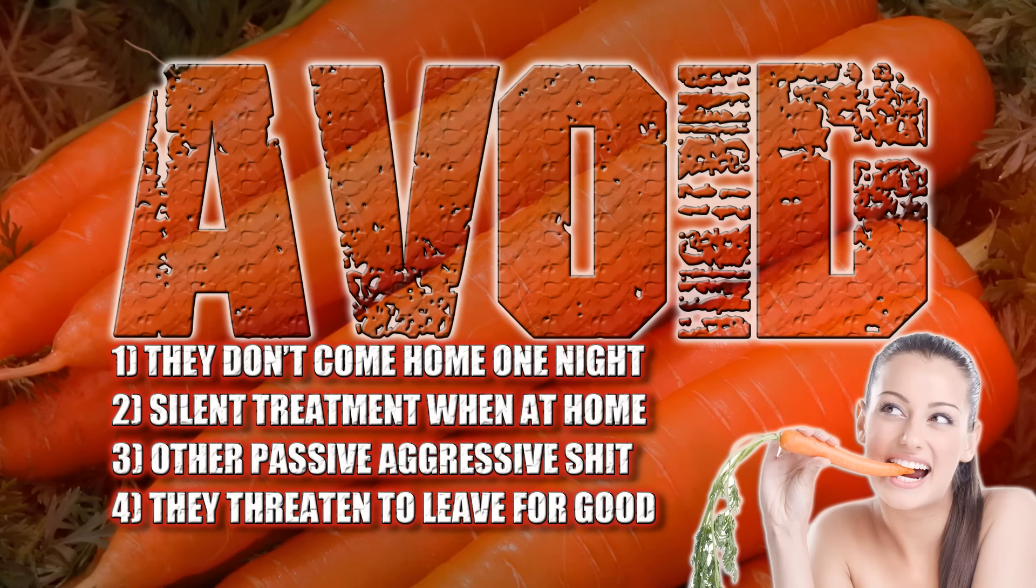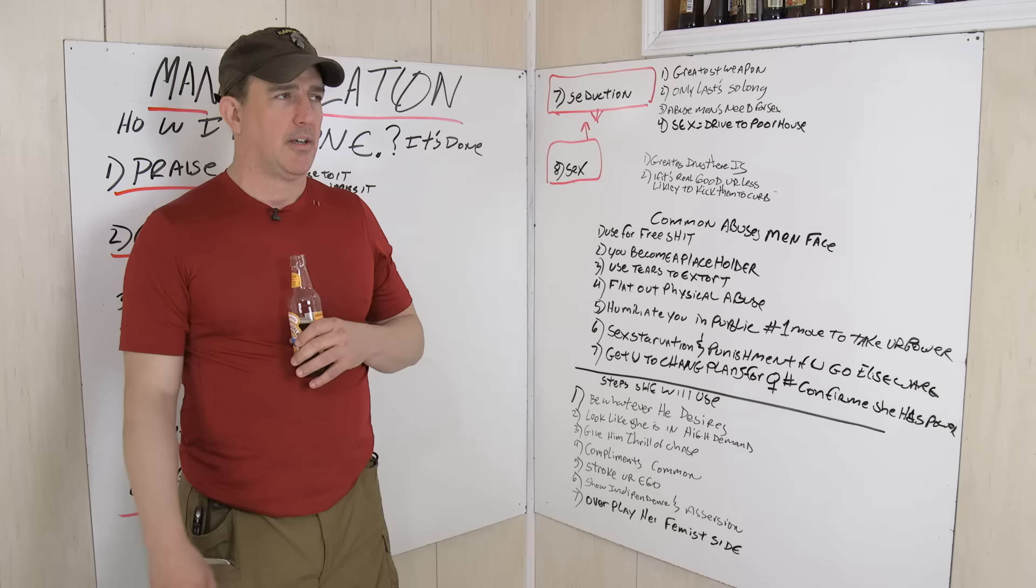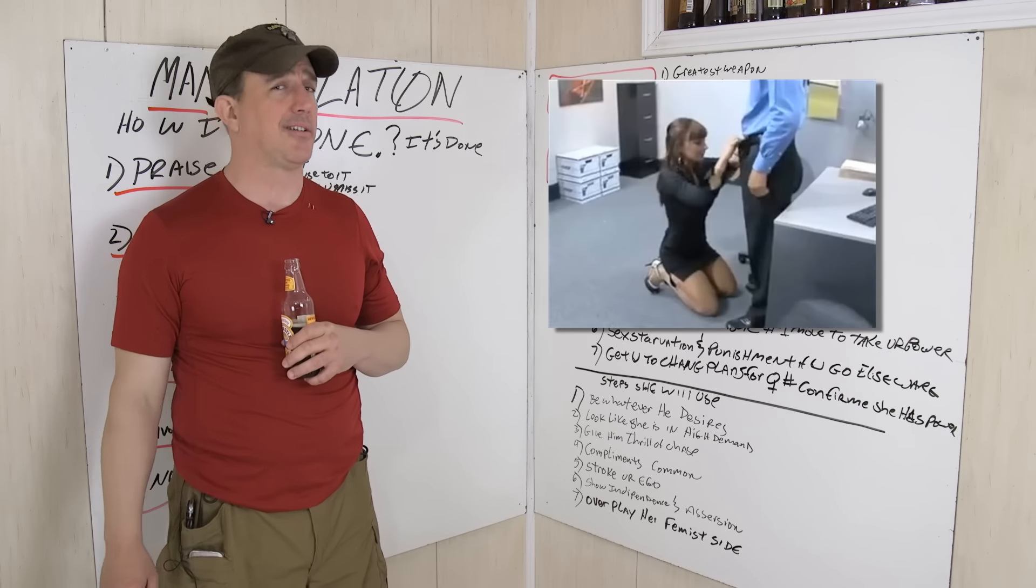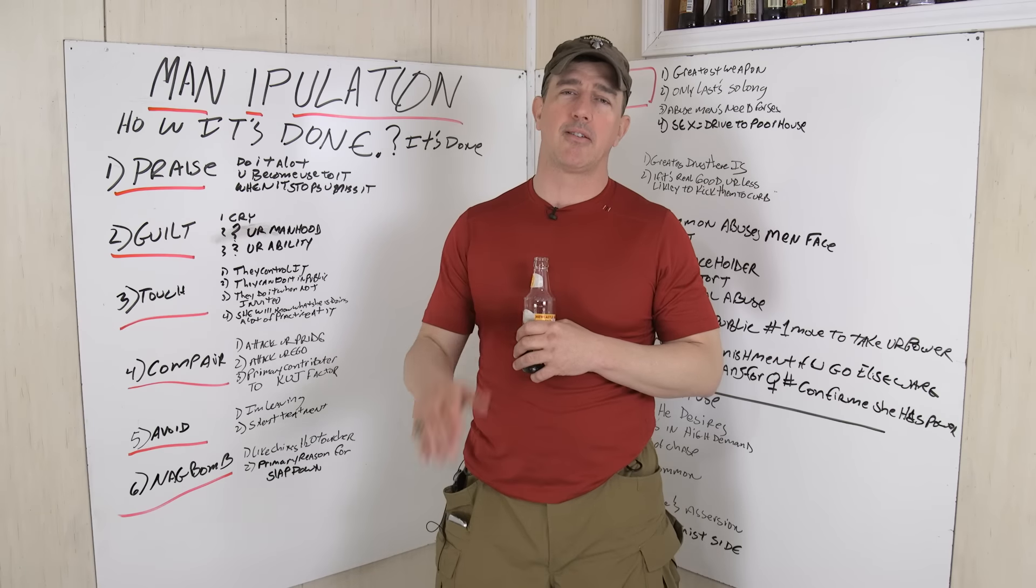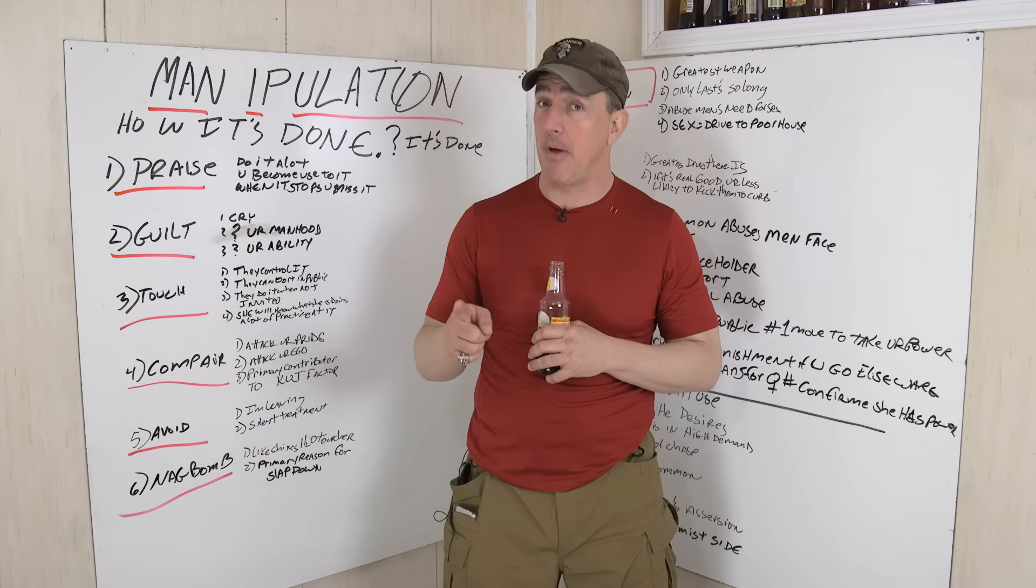Y'all know the avoidance thing. Not coming home, the silent treatment, or threatening to flat out leave. So in today's day and age, since feminism has won, just let them go. They're not worth it anyway. If she's staying away from home or doing a lot of overtime, she's already getting her tonsils buttered elsewhere. Usually this really isn't apparent until you get past like the third to fifth year of a relationship or you get married.